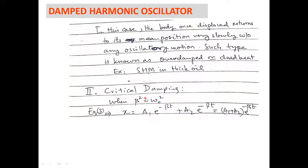Now, in the case of critical damping, we suppose that beta-squared equals omega-naught-squared. When this is assumed, equation 3 becomes x equals a1·e^(−beta·t) plus a2·e^(−beta·t). Since e^(−beta·t) is common in both terms, we can write this as (a1 plus a2)·e^(−beta·t).